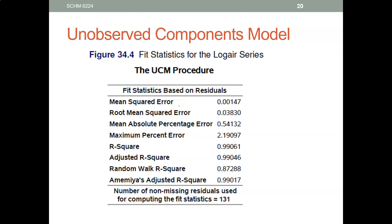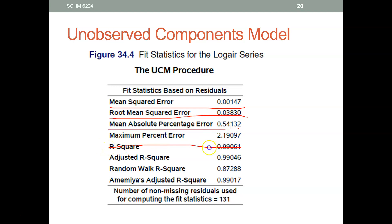SAS will give you the forecast quality measures: mean squared error, root mean squared error, and mean absolute percentage error — SAS automatically calculates these for you. SAS also gives you R squared, but don't use R squared. Compare your mean squared error and mean absolute deviation for exponential smoothing, regression with dummy variables, and the unobserved components model.